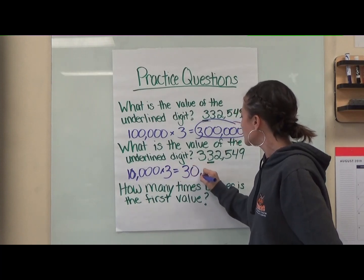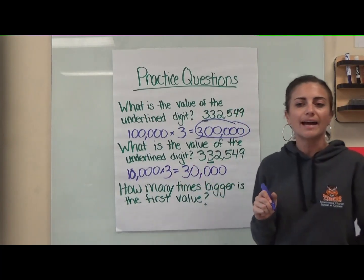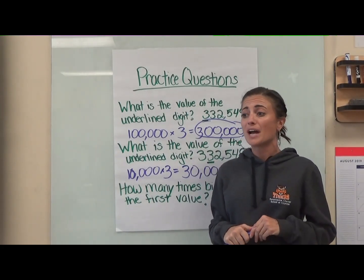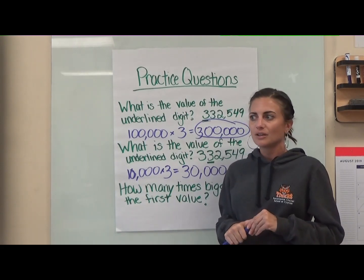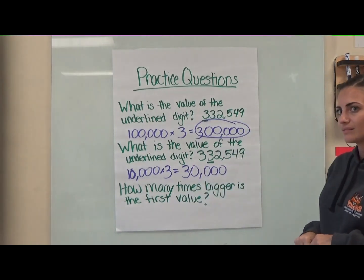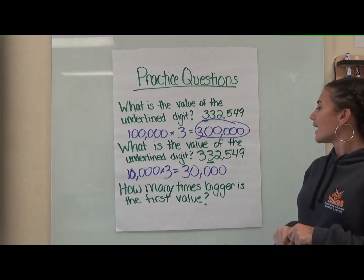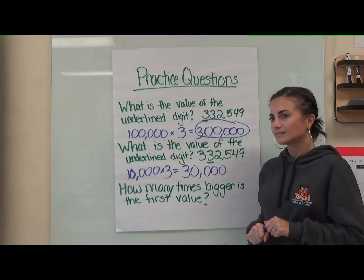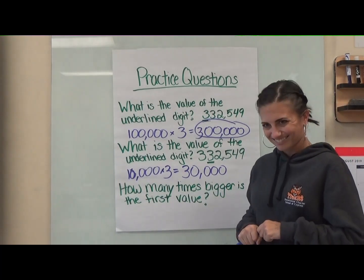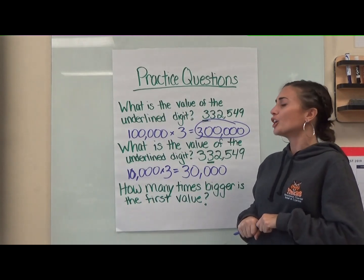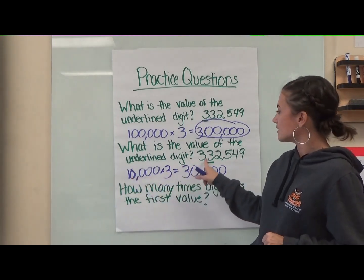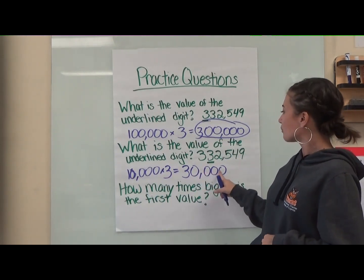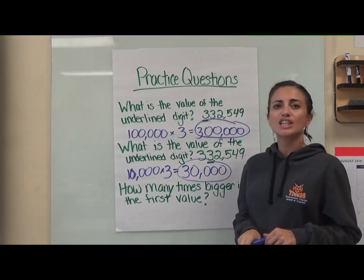And how am I going to know how many zeros I'm supposed to have to make sure I did this correctly? There are four numbers after the underlined digit — one, two, three, four — meaning there should be four zeros. One, two, three, four. So my value here is thirty thousand.